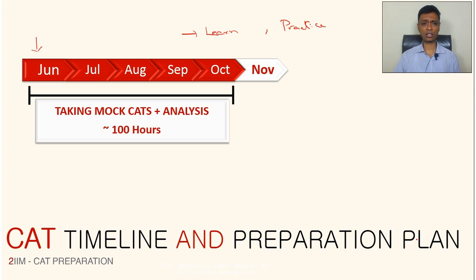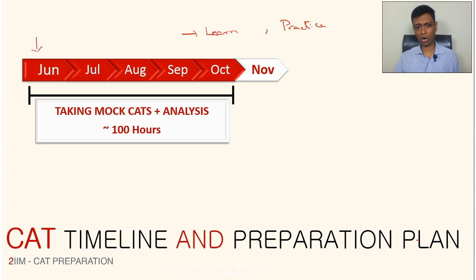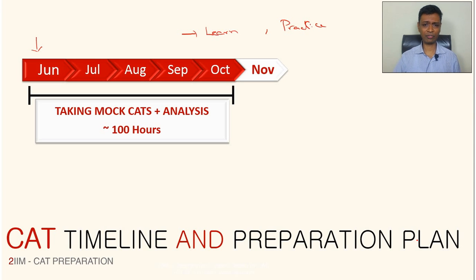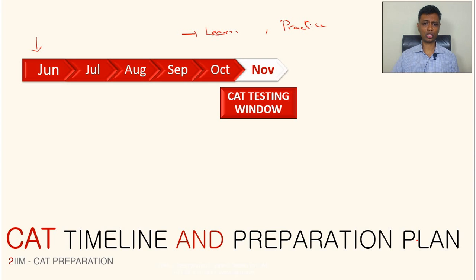For mock CATs, you should allocate about 100 hours. Taking an exam takes three hours and reviewing it takes another three hours, so to do justice you should take at least 12 to 14 mock CATs. You've got to put in three hours plus three hours for 12 to 15 mock CATs. This is vital because CAT is a very tiring exam and your body has to get geared to spending three hours at full intensity — so don't cut corners on this.